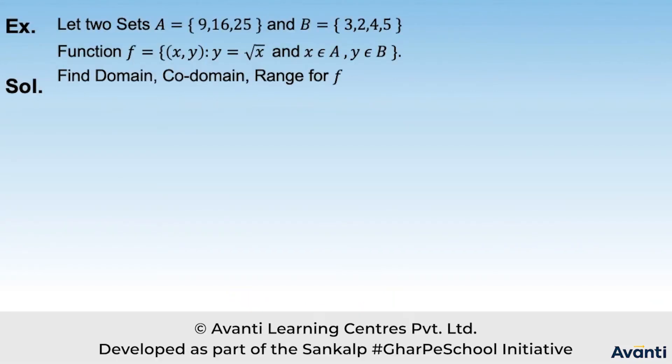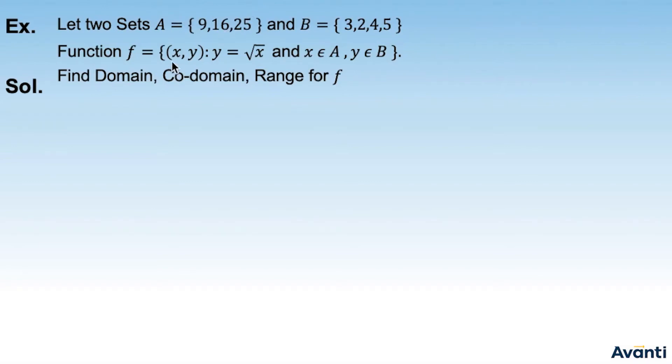Aayi ek example dekhte hai. Let two sets A = {9, 16, 25} and B = {3, 2, 4, 5}. Function f hai, {(x, y): y = √x and x ∈ A, y ∈ B}. Find the domain, co-domain and range for f.